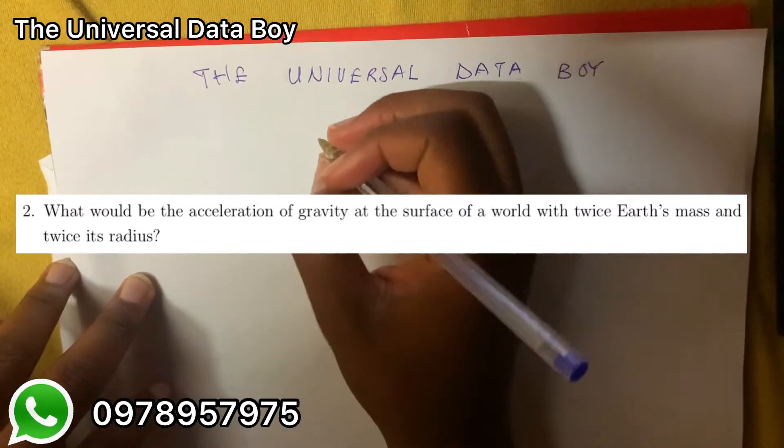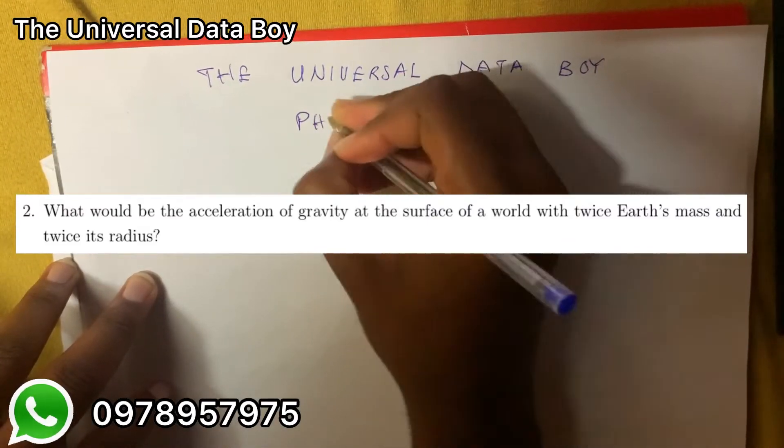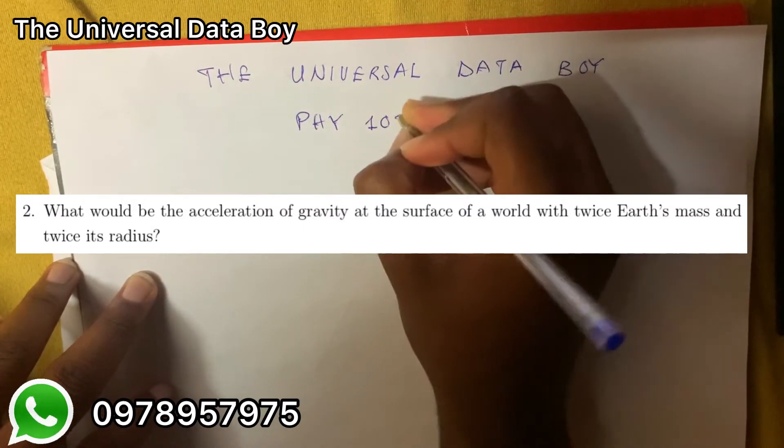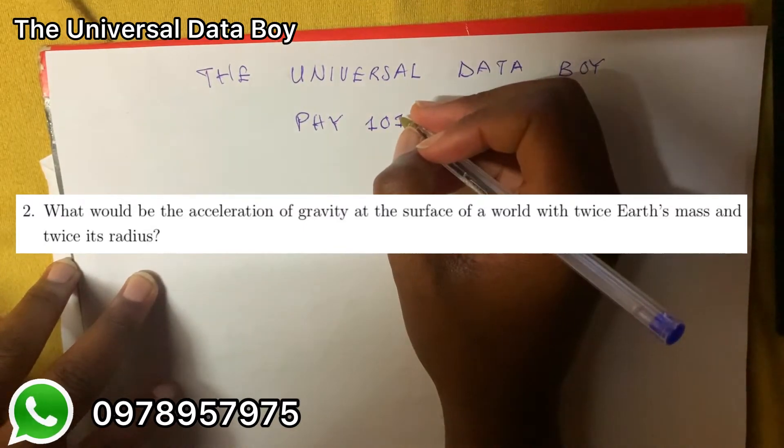Question 2, Tearsheet 5 reads: what would be the acceleration of gravity at the surface of a world with twice its mass and twice its radius?